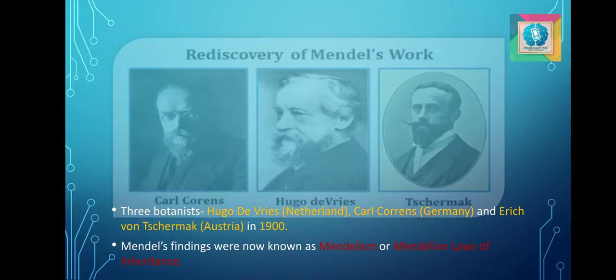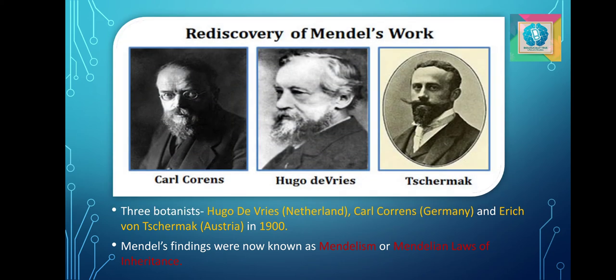Now we will discuss about the rediscovery of Mendel's work. In 1900, three botanists — Karl Correns from Germany, Hugo de Vries from the Netherlands, and E. Tschermak in Austria — rediscovered Mendelian principles independently. After the rediscovery, Mendel's work was named as Mendelism or Mendelian Laws of Inheritance.